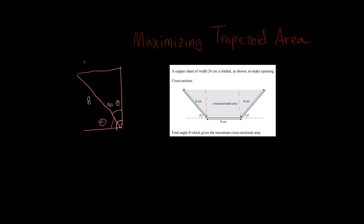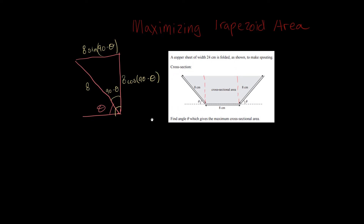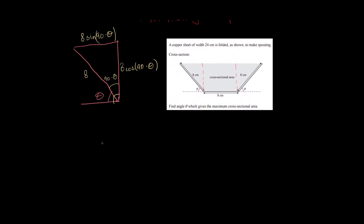So I can say that this side is equal to 8 sine of (90 minus theta), and this side is equal to 8 cosine of (90 minus theta). So how can I write my area of a triangle? Well, that's just one half times the base, which is 8 sine of (90 minus theta), times the height, which is 8 cosine of (90 minus theta). I have two of these triangles, so I can put a times 2 around this.